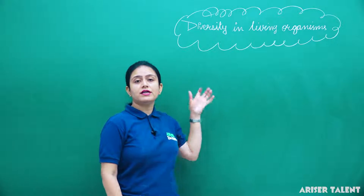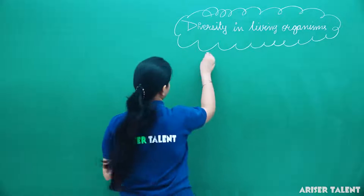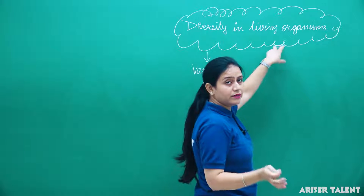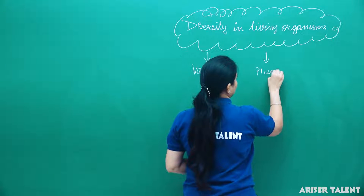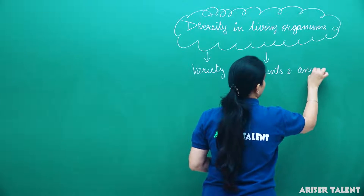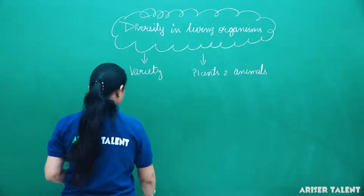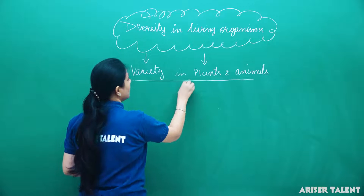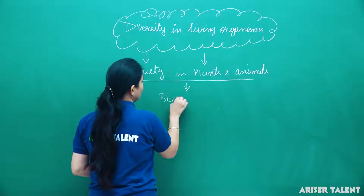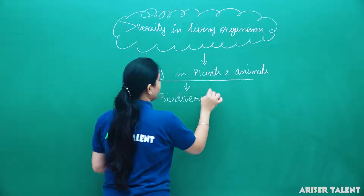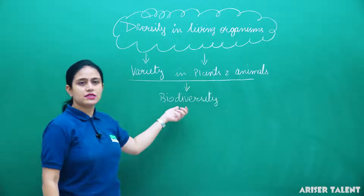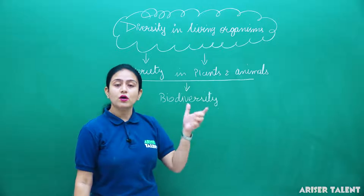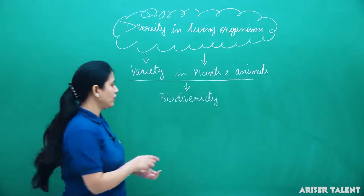So, what do you mean by diversity? Diversity means variety. Living organisms includes both plants and animals. Thus we can say that variety in plants and animals is known as diversity, and this is also known as biodiversity. Bio means related to living organisms and diversity means variety. Thus, we can say that biodiversity is the different forms of living organisms, or we can say the variety of living organisms.